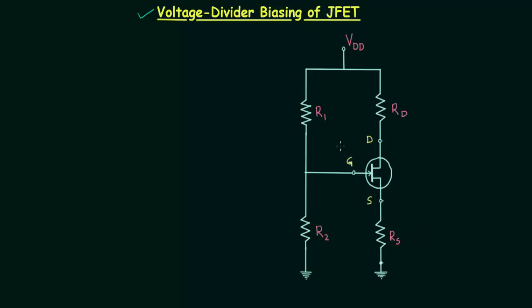The bypass capacitor C3 will also be replaced by an open circuit. So this is how the circuit will look. The potential at this point is equal to VDD and the potential at this point is also equal to VDD. Instead of taking VDD common, I will simply assign VDD individually to both points, and this will help us perform the analysis.